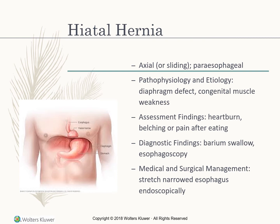Hiatal hernia is when part of the stomach protrudes into the lower portion of the thorax. There are two kinds: axial or sliding, and paraesophageal. This causes heartburn, belching, or pain after eating. Diagnostics include barium swallow and esophagoscopy. For surgical treatment, you can stretch a narrowed esophagus, or surgically restore the stomach to its proper position in the case of a paraesophageal hernia.